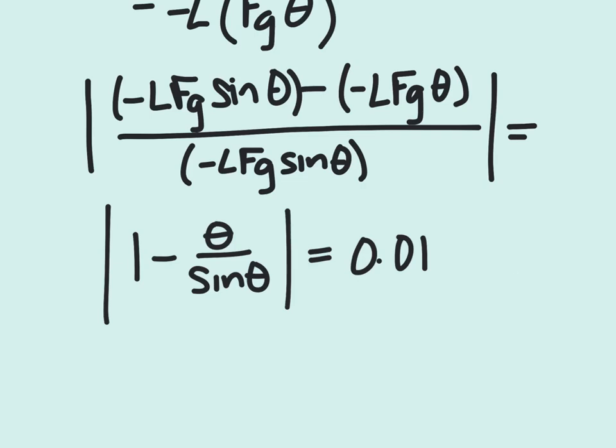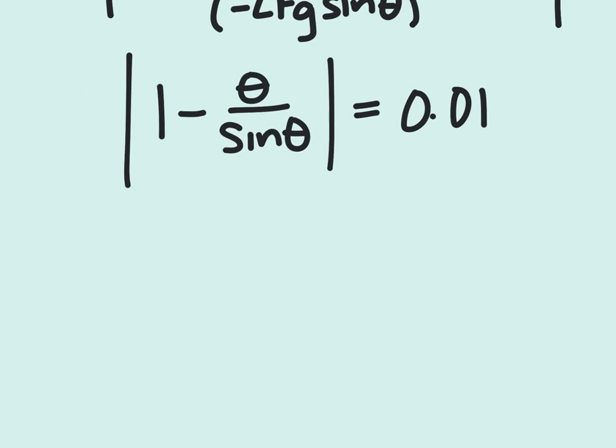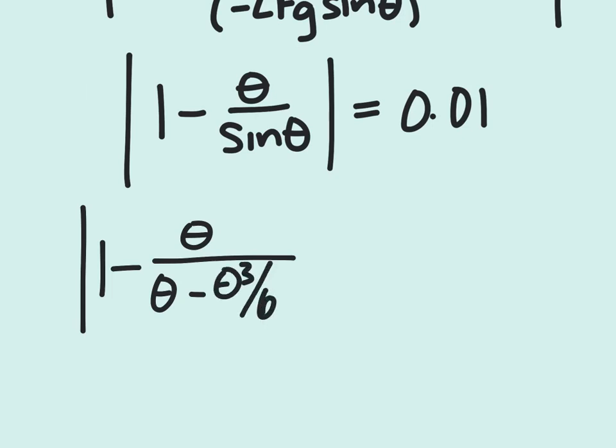We can expand our sine theta to approximately theta minus theta cubed divided by 6. So if we write this again, we'll have 1 minus theta divided by theta minus theta cubed over 6, absolute value equals 0.01.